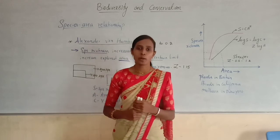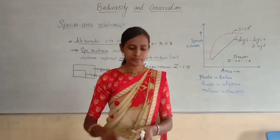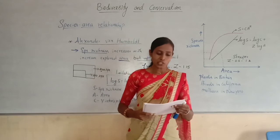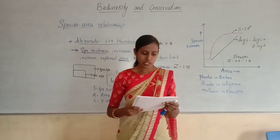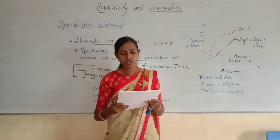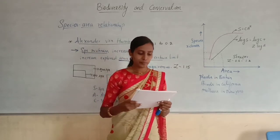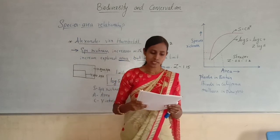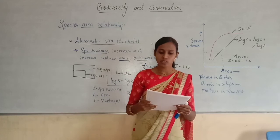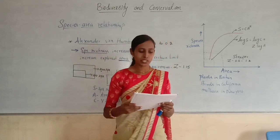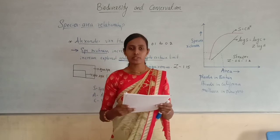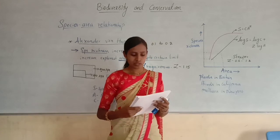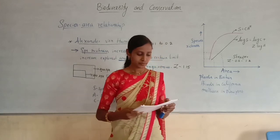Now we will discuss a few objective questions. Question 1: Species-area relationship was given by — Option A: British Zoologist and Geographer David Tilman; Option B: German Modernist and Geographer Alexander von Humboldt; Option C: German Naturalist and Geographer Alexander von Humboldt; Option D: British Naturalist and Geographer Alexander von Humboldt. Alexander von Humboldt was a German Naturalist and Geographer, so Option C is correct.